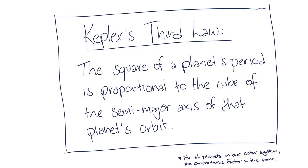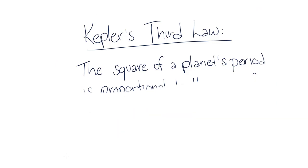So let's consider a circular orbit and see if Kepler's third law holds. Kepler's third law states that the square of the period of the orbit will be proportional to the cube of the radius of the orbit.